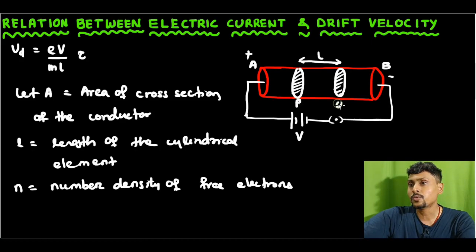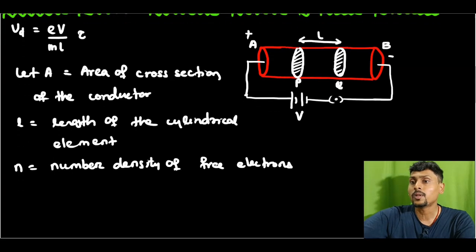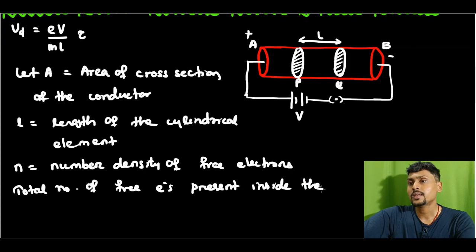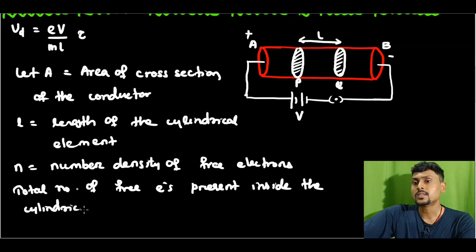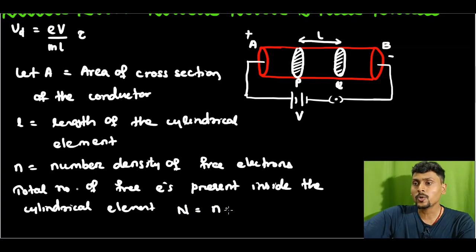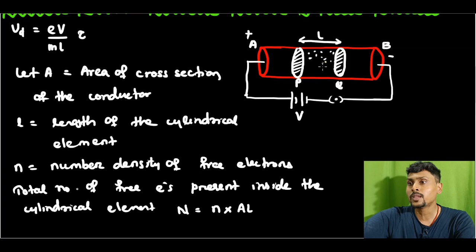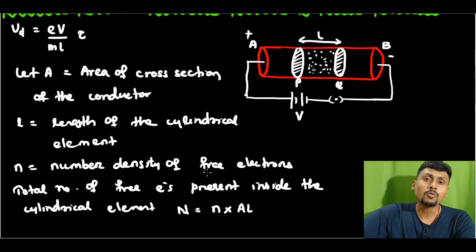We have the cylindrical element with ends P and Q. In this cylindrical volume, how many free electrons are present? The total number of free electrons present inside the cylindrical element is equal to the number density of free electrons multiplied by the volume of the cylinder, which is A into L. So, there are n times A times L free electrons.